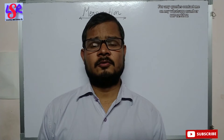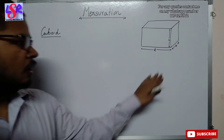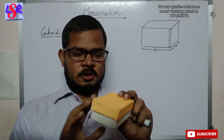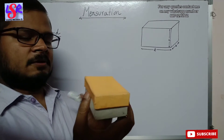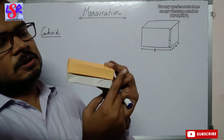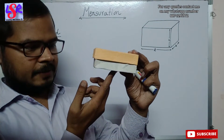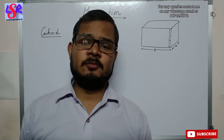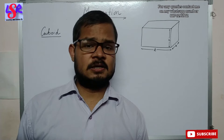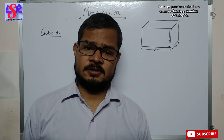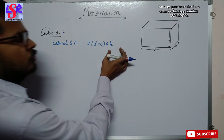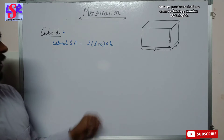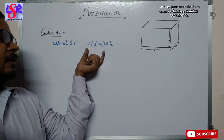First of all we are going to learn the formula for the surface area of a cuboid. Here we have a figure in the shape of a cuboid — let's suppose this box is in the shape of a cuboid. If we calculate the area of all the standing parts, not including the top or the base, that is known as the lateral surface area. Lateral means the standing portion. The formula for lateral surface area is 2(L + B) × H, where 2(L + B) is the perimeter of the rectangle multiplied by the height.